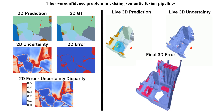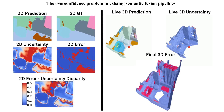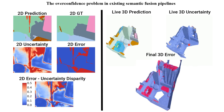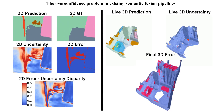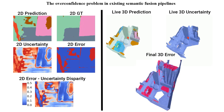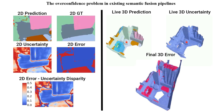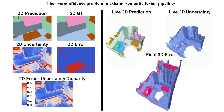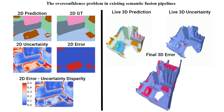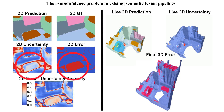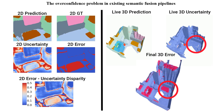On the left we show the image segmentation, its ground truth, its uncertainty prediction, its errors, and the disparity between its uncertainty and error maps. On the right we have the live 3D reconstruction using the most common fusion strategy of recursive vision update. Note how in 2D the uncertainty and error are well aligned, resulting in a modest parity between the two, while the 3D model is always overconfident in its prediction, even when it makes a mistake.